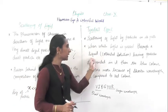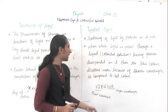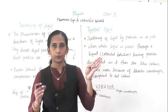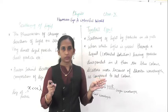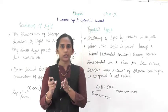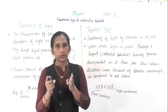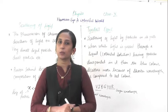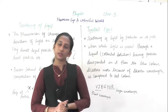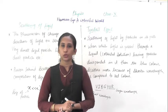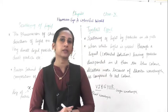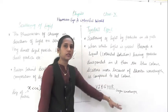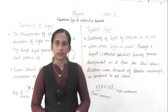When white light is passed through a liquid colloidal solution having particles suspended in it, the blue color scatters more. When the light enters into the glass of the colloidal solution and hits the particles in it, there is scattering — and which light scatters the most? Blue light scatters more because blue has a shorter wavelength. That's why blue light scatters more as compared to red, because red has a very large wavelength.